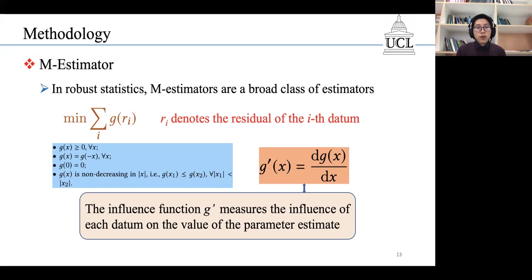So, if we want the M-Estimator to be robust to outliers, its influence function should be bounded and also converge to zero when x goes to infinity.